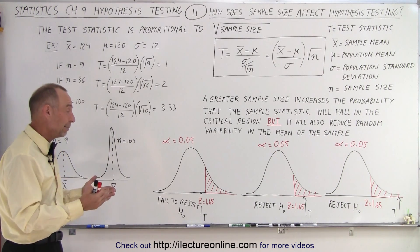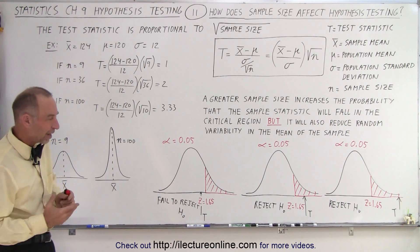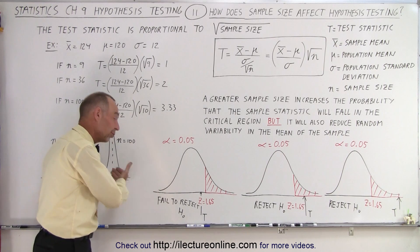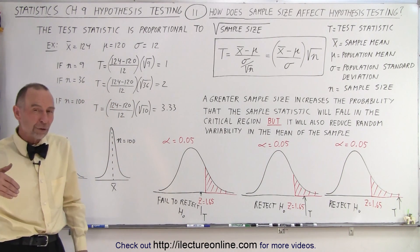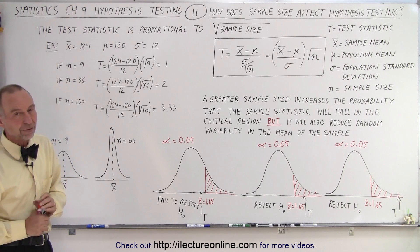It costs more money, it takes more time to test more things, but then if you take a larger sample size, you're more likely then to make the right decision if you're going to fail to reject the null hypothesis or if you're going to reject the null hypothesis because you did have a larger sample size.